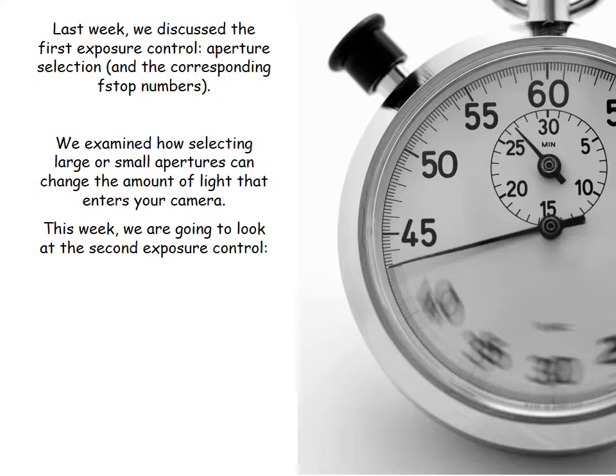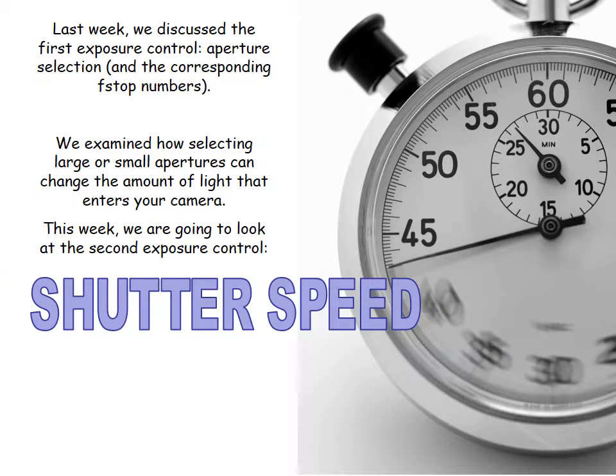Last week we discussed the first exposure control, which was aperture selection. We also talked about how the f-stop numbers designate whether or not an aperture is big or small. Remember Tupac and the .22 caliber bullet? We examined how selecting large or small apertures can change the amount of light that enters your camera. This week we're going to look at the second exposure control, which is shutter speed.